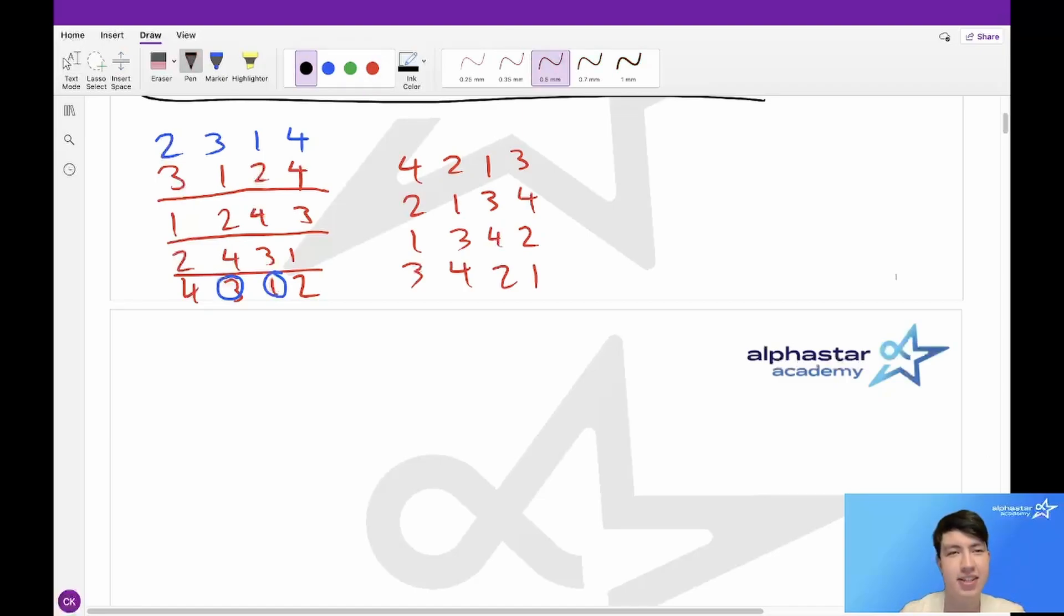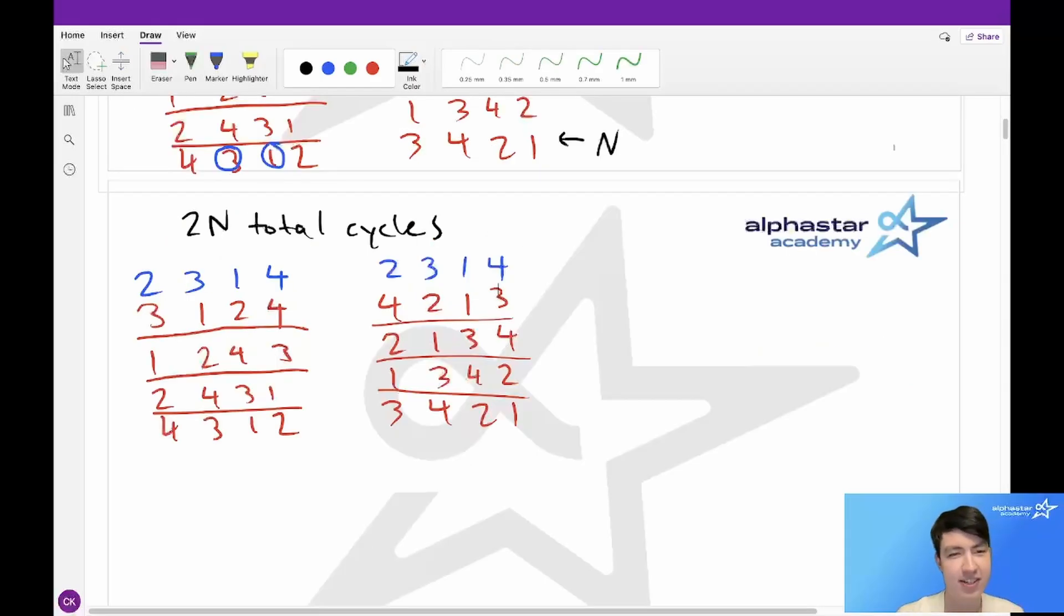So, the main solution idea is we want to look at all of these cycles and see which one matches off the best with the original. However, this is unfortunately too slow because each one of these cycles is length n, and we have 2 times n possible cycles in total. So, if we wanted to check every single one against the original cycle, then we'd have to check 2n squared, and unfortunately n is too large for this. So, we'll have to find some way to optimize this.